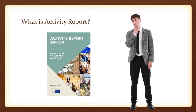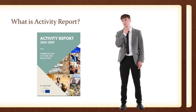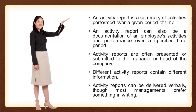First, let's take a look at what is an activity report. An activity report can be of many types. Basically, it's a summary of activities performed over a given period of time. An activity report can also be a documentation of an employee's activities and performance over a specified time period, which is submitted to the senior. Activity reports are often presented or submitted to the manager or head of the company. Different kinds of activity reports contain different information and may span different periods of time. Activity reports can be delivered verbally also, but most managements prefer a written document.